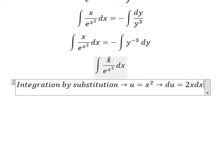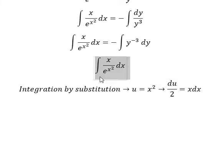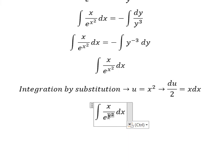Because we don't have 2 in here, we divide both sides by 2. So we change this for u, and dx we change for du over 2.